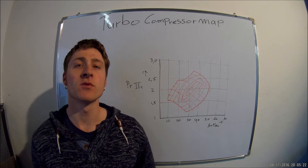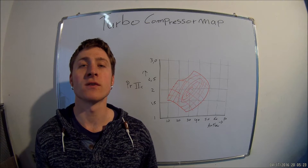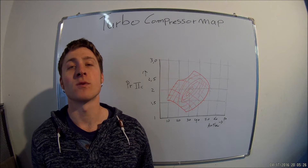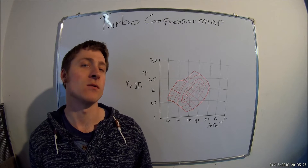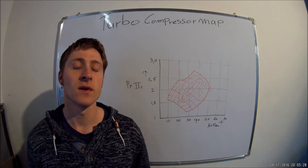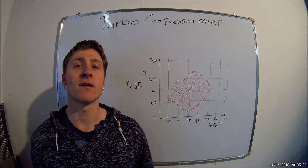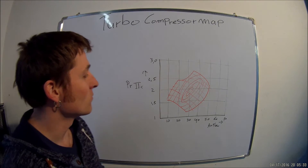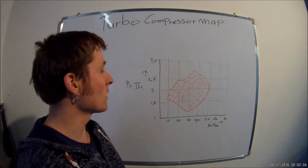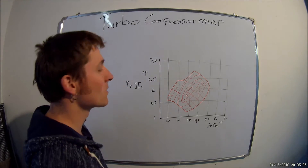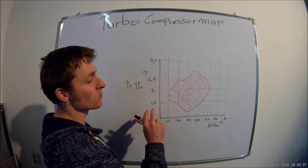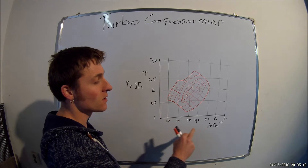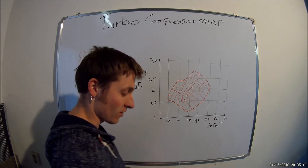Hello everybody, welcome to my video about the explanation of the compressor map for a turbo or a compressor. A compressor map is all about the characteristics of a compressor. When you're looking at the map, it's built around two lines: one is the pressure ratio and one is the air flow.